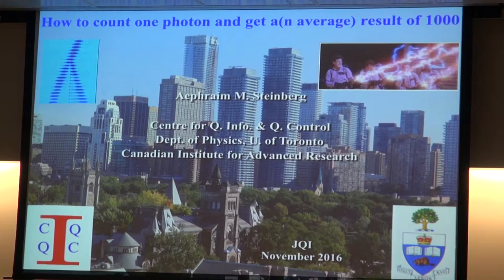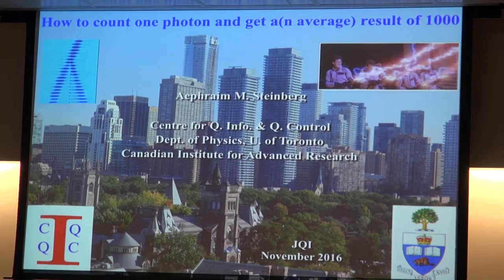What I want to do is tell you about this funny bit of quantum measurement we've been interested in lately: how to count one photon and get an average result of a thousand. I seem to be attached to these paradoxical things like light traveling faster than light, but hopefully by the end you'll see there's a really down-to-earth experiment behind this about quantum light-matter interfaces.